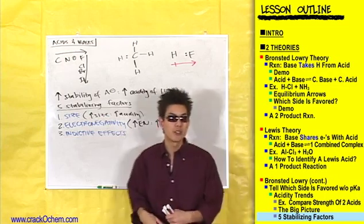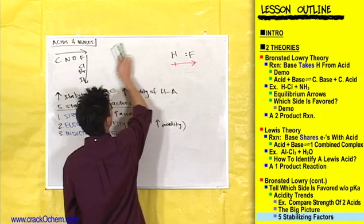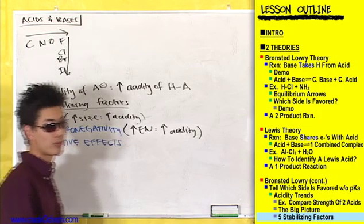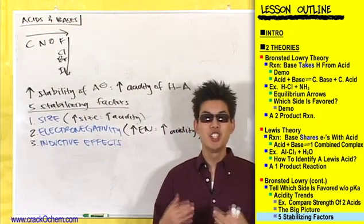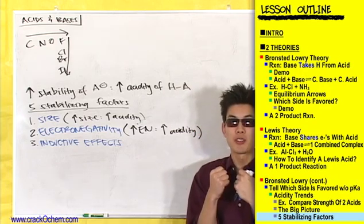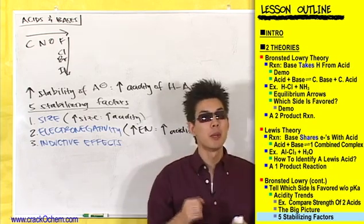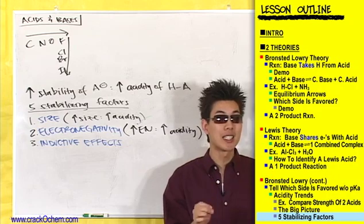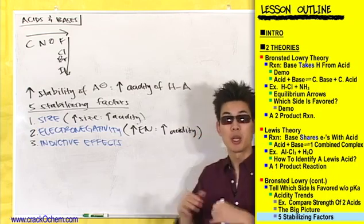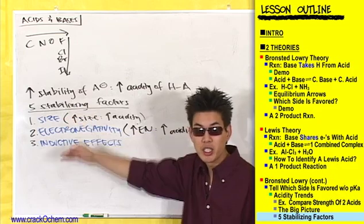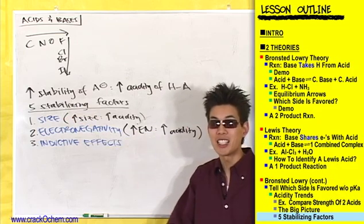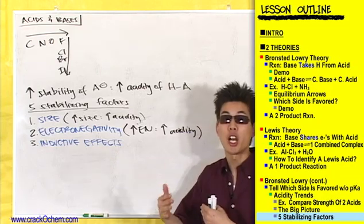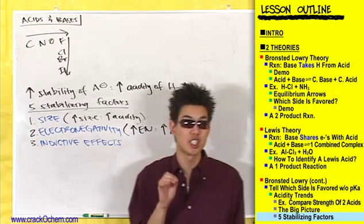Let's clear this up right now. Inductive effects do have to do with pulling electrons away from a hydrogen, making it easy for that hydrogen to fall off. But for inductive effects, you're going to be comparing the electronegativity of atoms that are not directly connected to the hydrogen that's going to fall off. When we did size and electronegativity, we were comparing atoms directly connected to the hydrogen. Inductive effects — we're looking at atoms not directly connected to the hydrogen that's going to fall off.